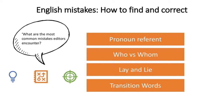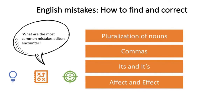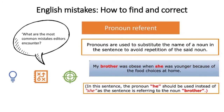What are the most common mistakes our editors encounter? Here are some: the pronoun referent, who versus whom, the use of lay versus lie, transition words, pluralization of nouns, the use of commas, the use of contractions — 'it's' versus 'its' with an apostrophe — and common words that sound similar but have quite different meanings, such as 'affect' and 'effect.' That's eight examples of common mistakes.